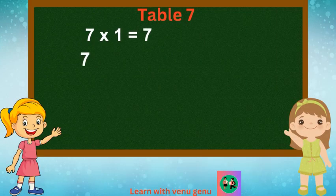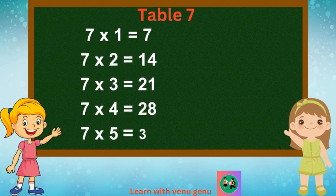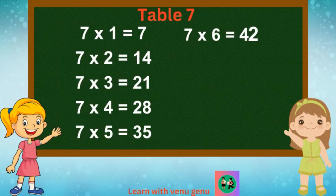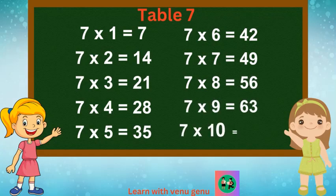7 1s are 7, 7 2s are 14, 7 3s are 21, 7 4s are 28, 7 5s are 35. 7 6s are 42, 7 7s are 49, 7 8s are 56, 7 9s are 63, 7 10s are 70.